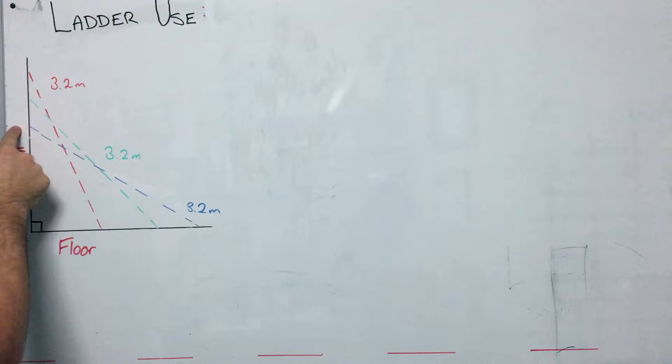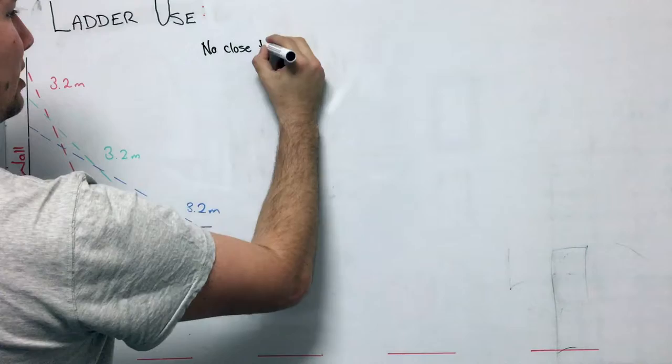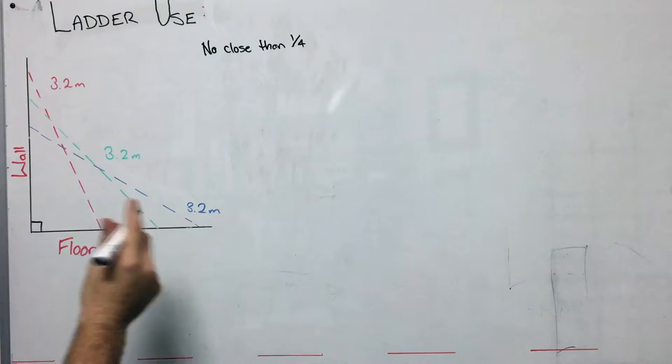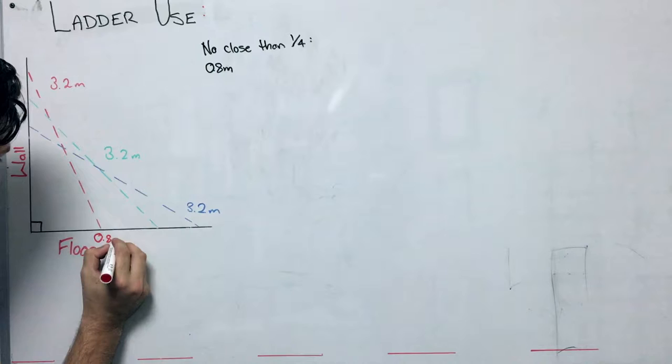So the question gave us some key information, and that was that the first thing is that it can be no closer than a quarter of its length. So if it's 3.2 metres long, we know that a quarter of that will be 0.8 metres. And that is represented here by the red line, so that will be 0.8 metres down here.